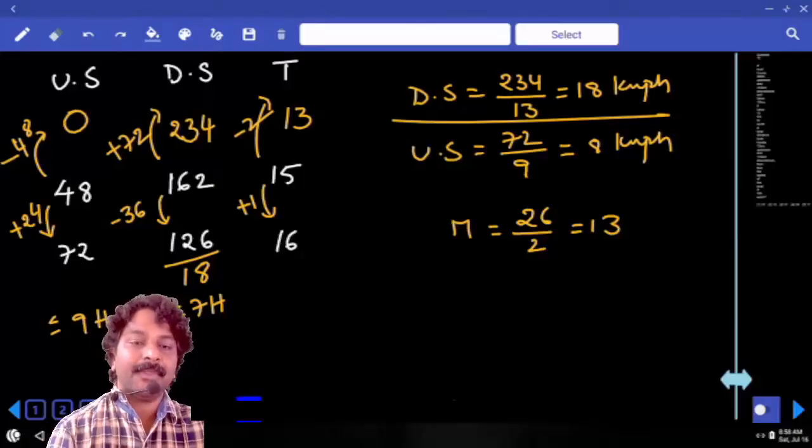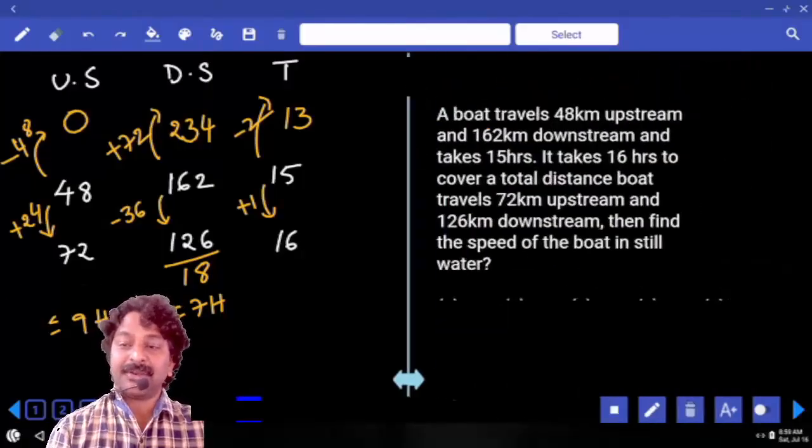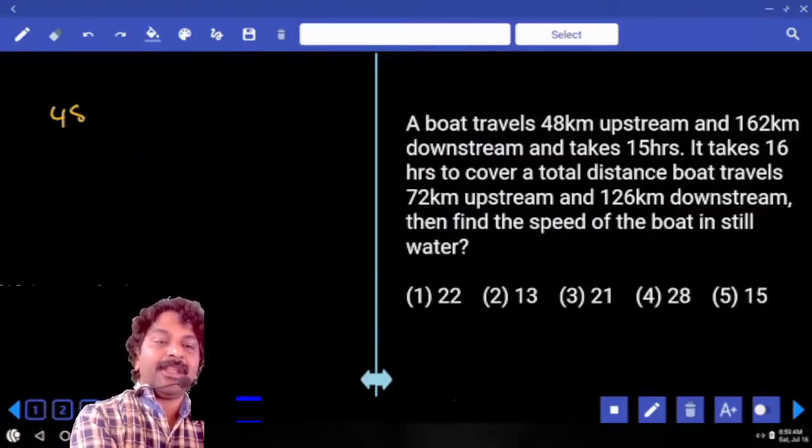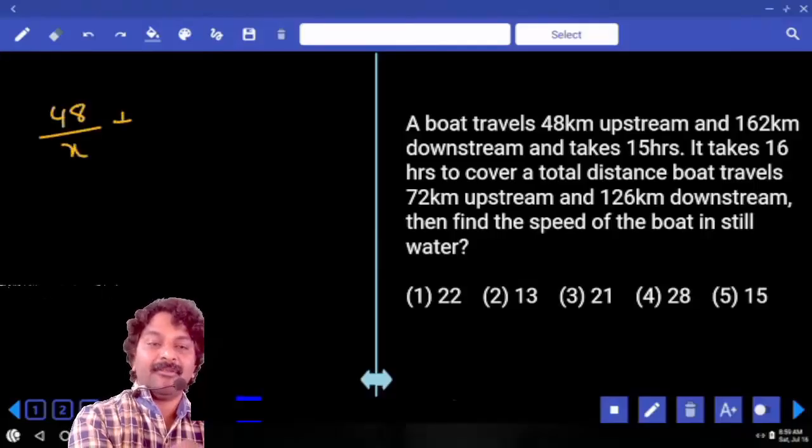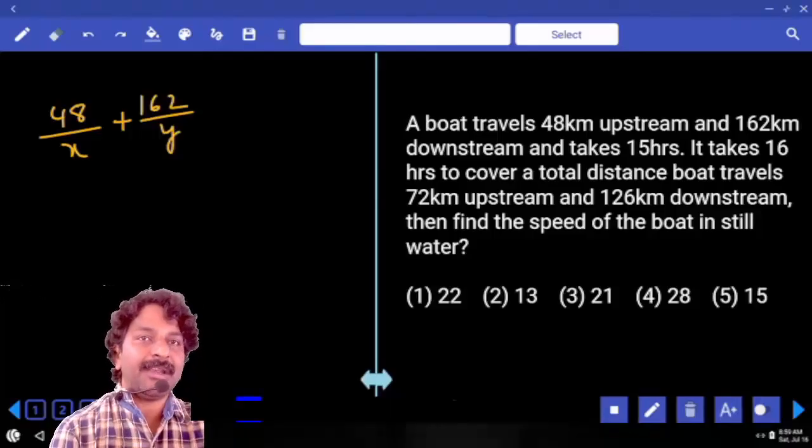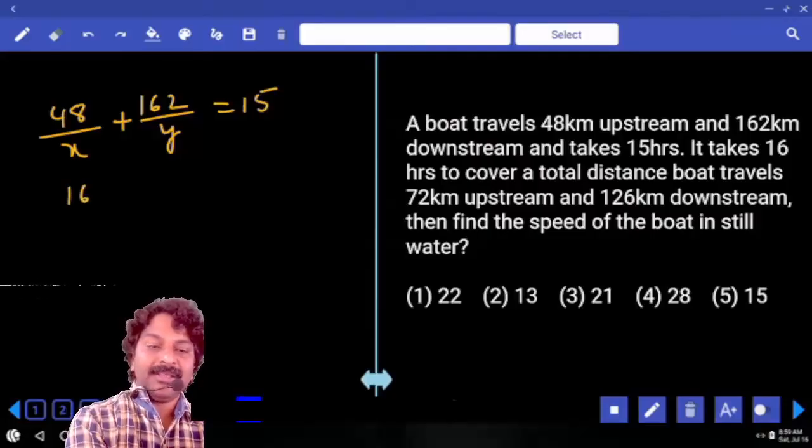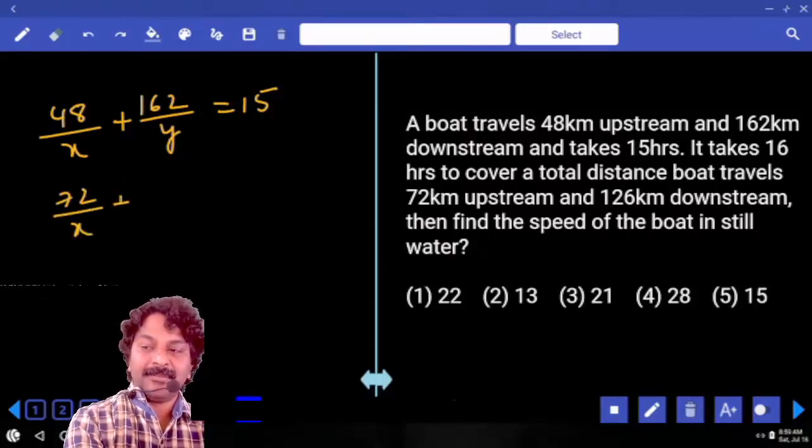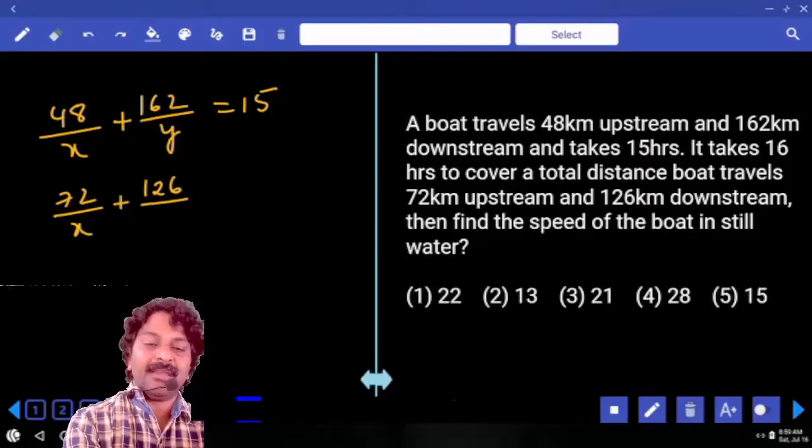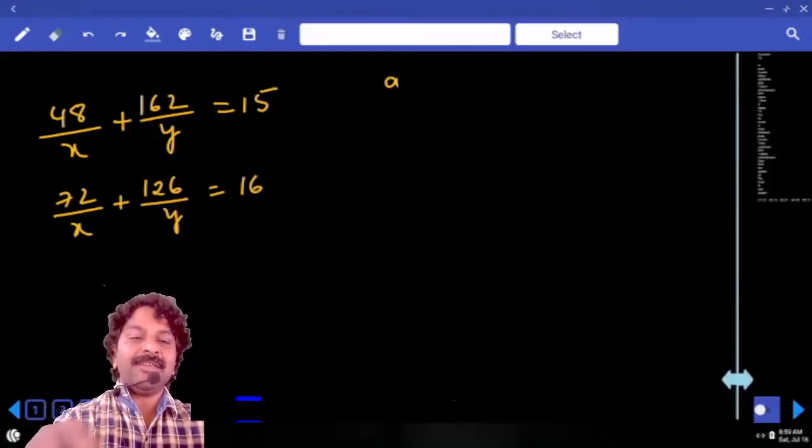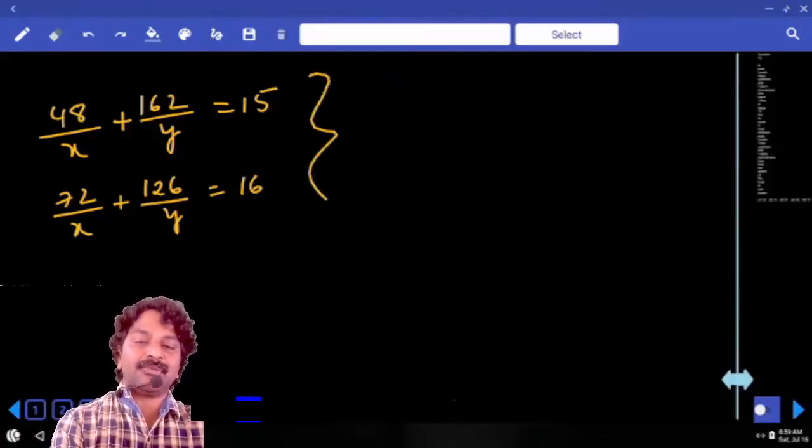Is this clear? If you want to solve this question using traditional method, how usually generally people do is 48 by x, 162 by y where x and y are upstream speed and then downstream speed which is equal to 15. Now, I will treat, if you want to solve these two questions as it is, it takes again lot of time.